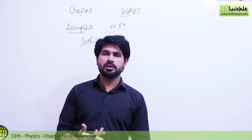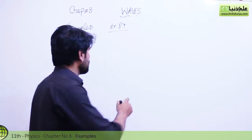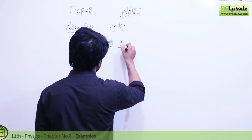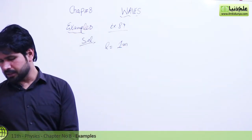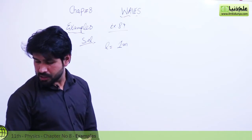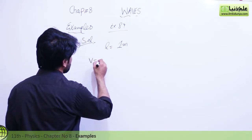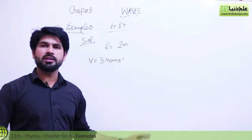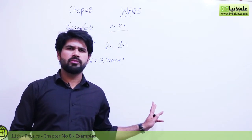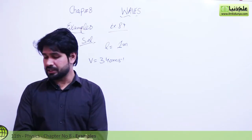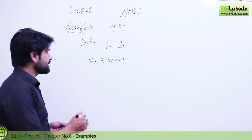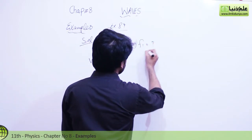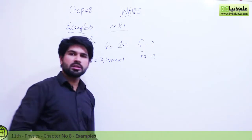First we will write our given data. We have length L = 1 meter, and the speed of sound V = 340 meters per second. We have two conditions: we need to find the fundamental frequency f1 and f2 in both cases.